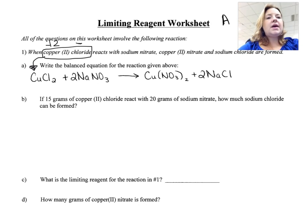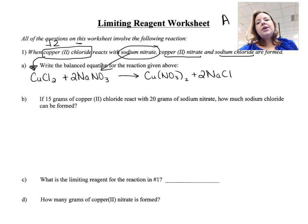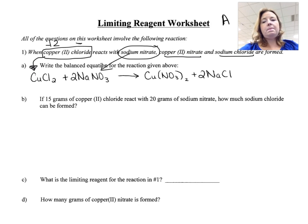Next, we've got that reacting with sodium nitrate, and that is going to produce 2 items: copper 2 nitrate and sodium chloride. I've already written the balanced equation for you, but we're going to get harder, and you are going to have to write the balanced equations on your own.